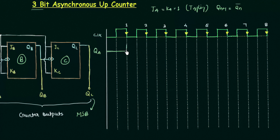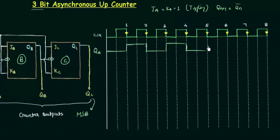QA remains high until the next falling edge, then toggles back to 0 and remains low until the following falling edge. In the same way we can plot the value of QA for all the remaining falling edges. This is not a new concept — you have already seen these things many times. This is how QA will look.